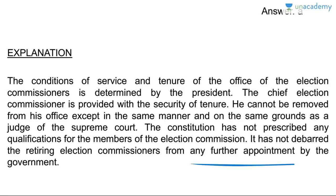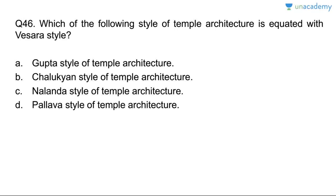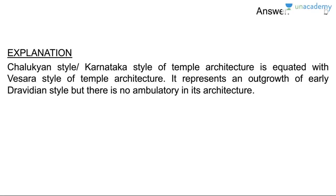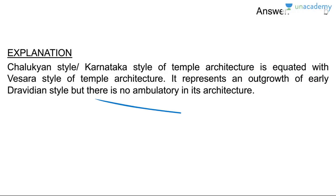Question forty-six: which style of temple architecture is equated with the Vesara style? The Chalukyan style — also called the Karnataka style of temple architecture — is equated with the Vesara style. It is the outgrowth of early Dravidian style but has no ambulatory in its architecture. Remember these points as they are frequently asked in Prelims.